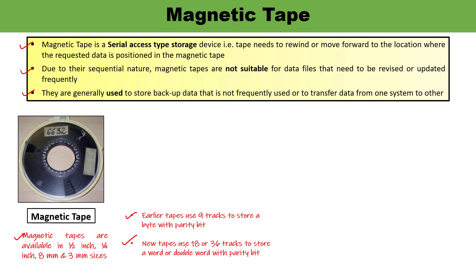Half-inch tapes are very costly and not commonly used. Very few companies manufacture half-inch tape. It comes in reel form — you must remember that some of you may have seen magnetic tape in the form of reels. Modern magnetic tapes for hard disk backup usually come in cassette form.